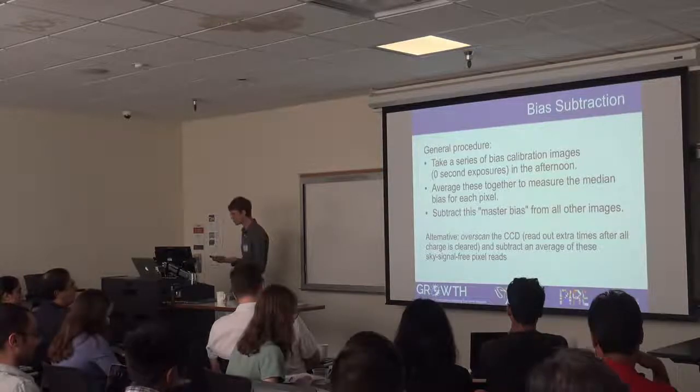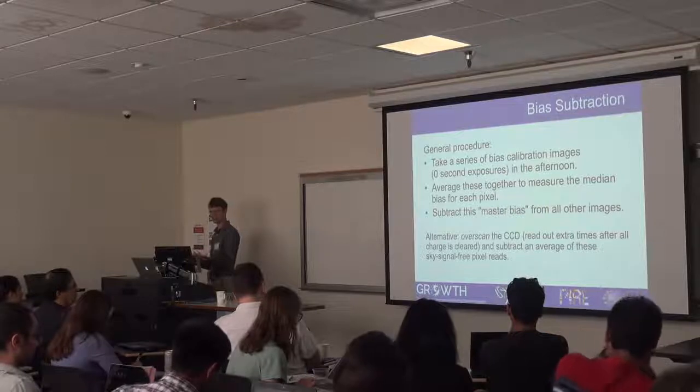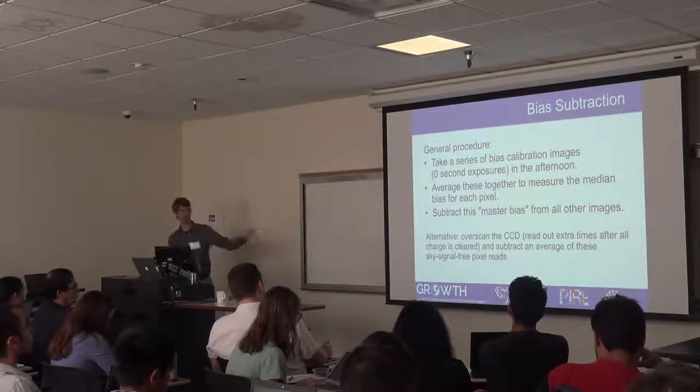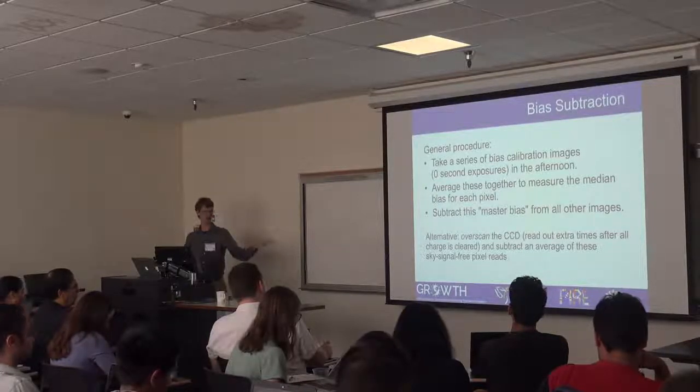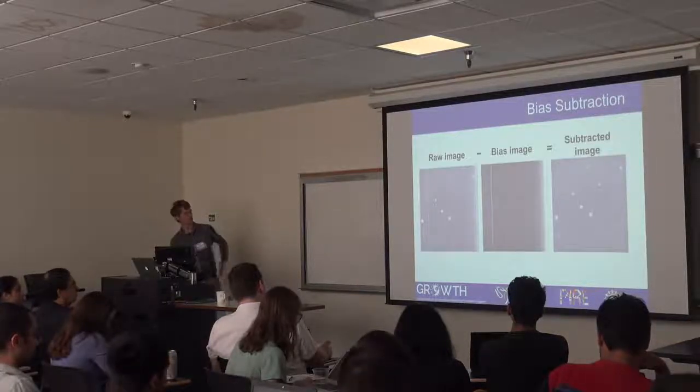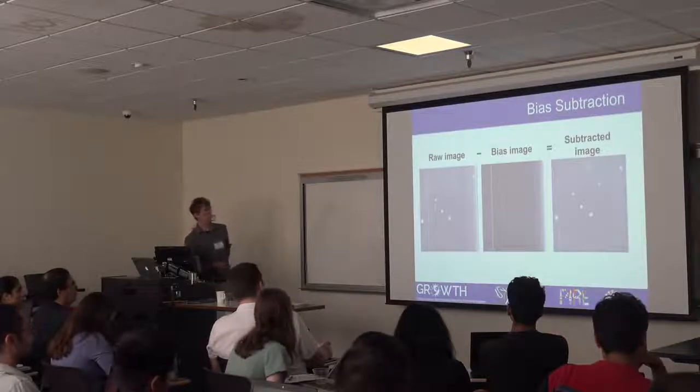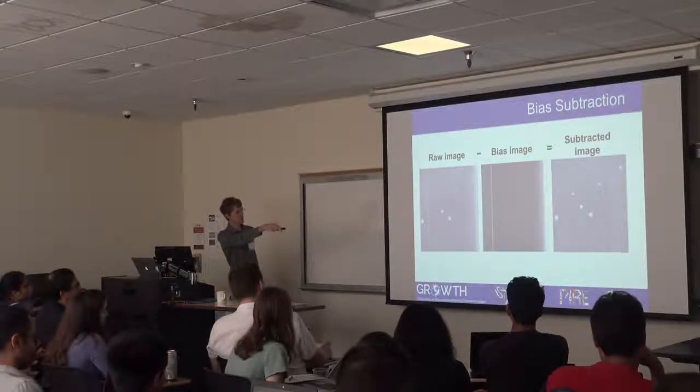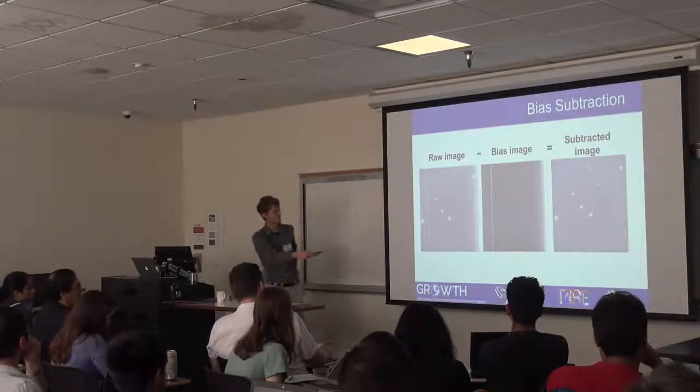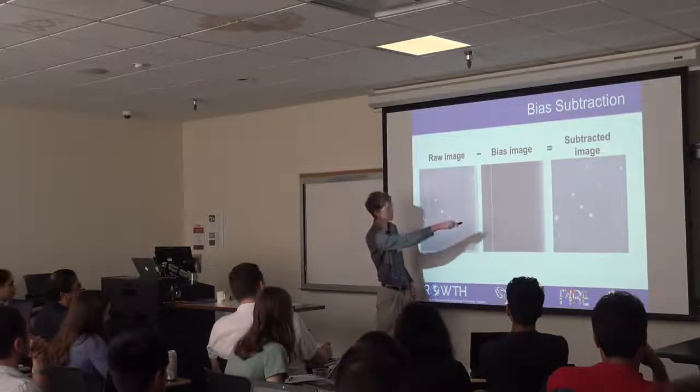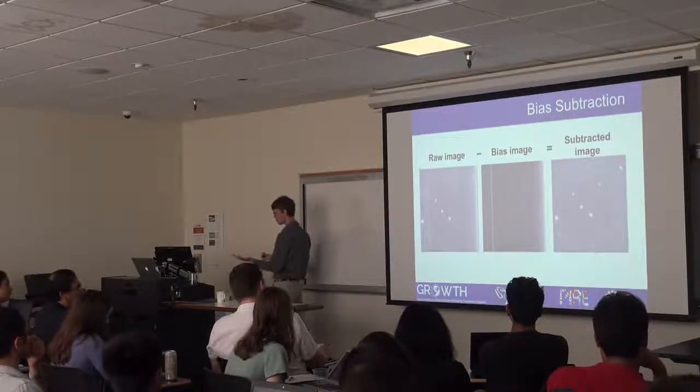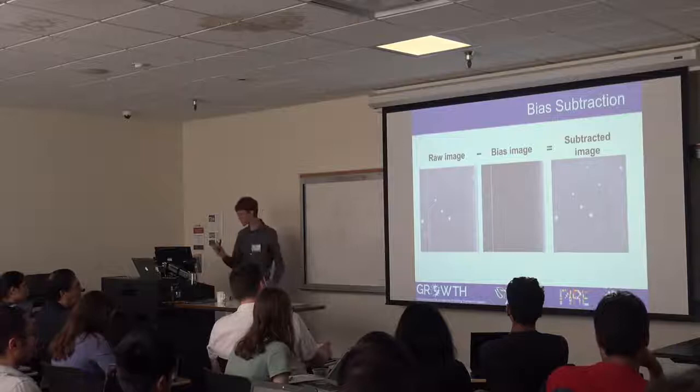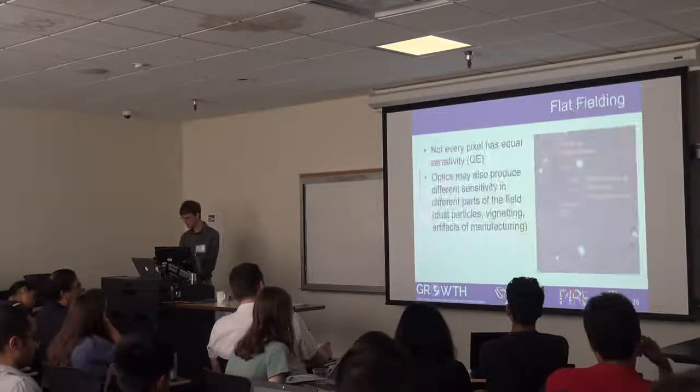We just read out the CCD a bunch of times and see how many counts show up and that's our bias level. We take a bunch of these, average them together to remove noise and artifacts that might have cropped up due to cosmic rays. We save it as a master bias image and then we simply subtract pixel by pixel that image from all our other images. That's the general procedure. There are other ways of doing it. In particular one of them is called the overscan method where we actually read out CCD an extra number of times compared to normal. This is an illustration of that. Here is a raw image with a telescope of a particular part of the sky. Here is a bias image that was taken earlier in the afternoon. You can see this bias image shows some structure. We just subtract A minus B and we get a subtracted image that removes some of those patterns.